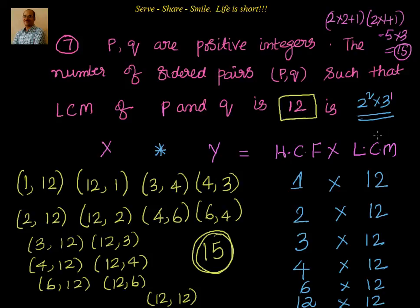This verification approach only works when the number is small. For a number like 252 it becomes very tedious. That's when the prime factorization formula is useful: for 2²×3, the total ordered pairs = (2×2+1) × (2×1+1) = 5×3 = 15. That's one interesting problem — thanks for your time and support, bye for now!